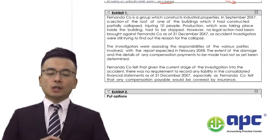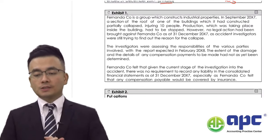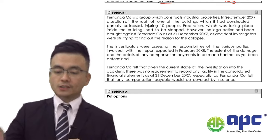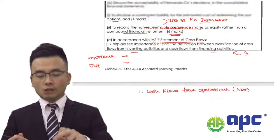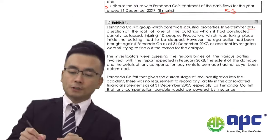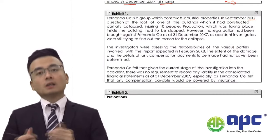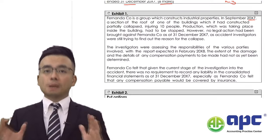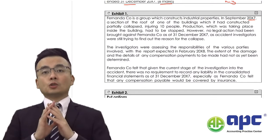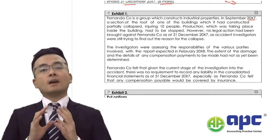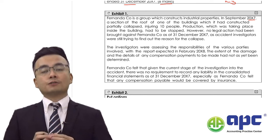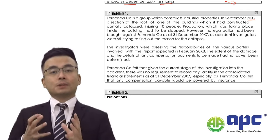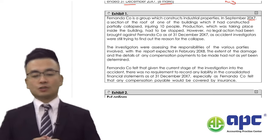We're told Fnada Company is a group that constructs industrial properties, and it is September 20X7. The current year-end will be 31st December. The event is before the year-end, so we are not expected to discuss IAS 10 — events after the reporting period — because these events happened before the current year-end.